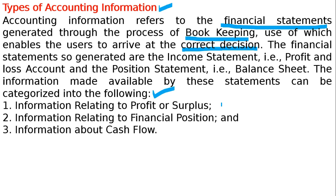First: information relating to profit or surplus — यानि loss भी, अगर loss भी मिलेगा. Second: information relating to financial position यानि balance sheet या position statement. Third: information about cash flow — पैसे कहां से आया, किधर गया. Business के अंदर पैसे कहां पर हम चीजें खरीद रहे, कहां पर machine खरीदा, गाड़ियां खरीदा, goods खरीदा बेचने के लिए, salary pay किया — यह cash outflow हो गया. Inflow में पैसे किधर किधर से आया, sales आया — यह सब detail में पता चलता है.